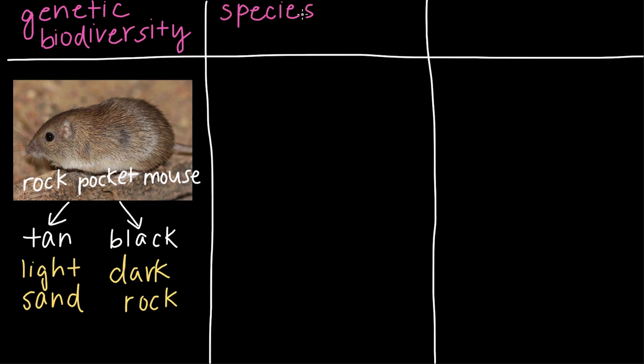So the second level is species biodiversity, which is the variety of species in a particular area. So going back to the Sonoran Desert, there are all kinds of mammals and birds, plants, and insects. But what I think is even more mind-boggling is the sheer number of bat species there are.